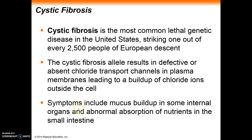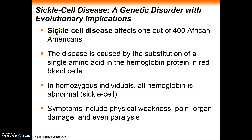In the gut, cystic fibrosis can actually slow the absorption of nutrients, making it harder for people with cystic fibrosis to gain the proper amount of nutrition. Now let's take a look at another disorder: sickle cell anemia, which affects one out of every 400 African Americans.